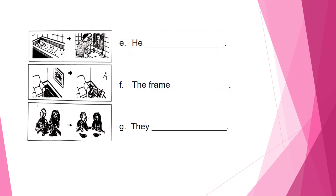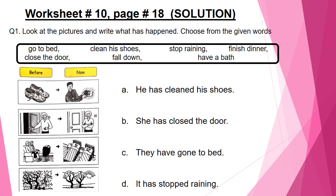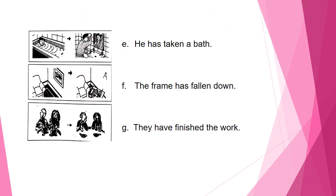Parts C, D, E, F, and G will be done by you. Now let us look at the solutions of worksheet number 10, page 18: he has cleaned his shoes, she has closed the door, they have gone to bed, it has stopped raining, he has taken a bath, the frame has fallen down, they have finished the work.